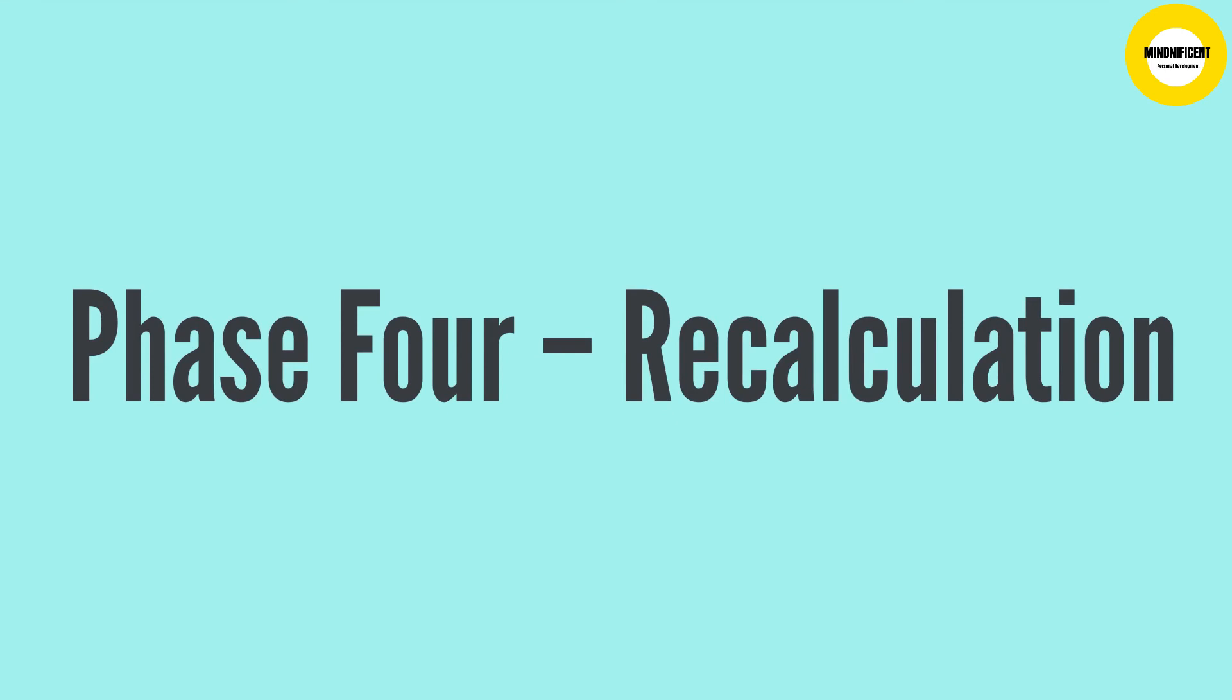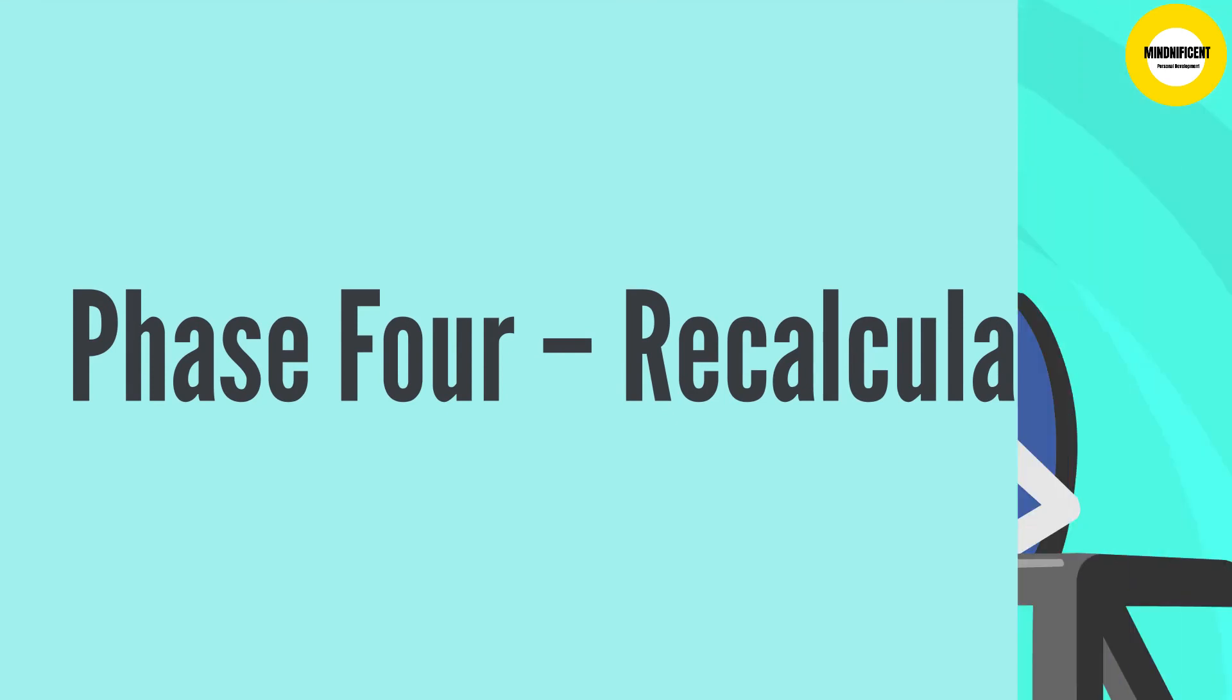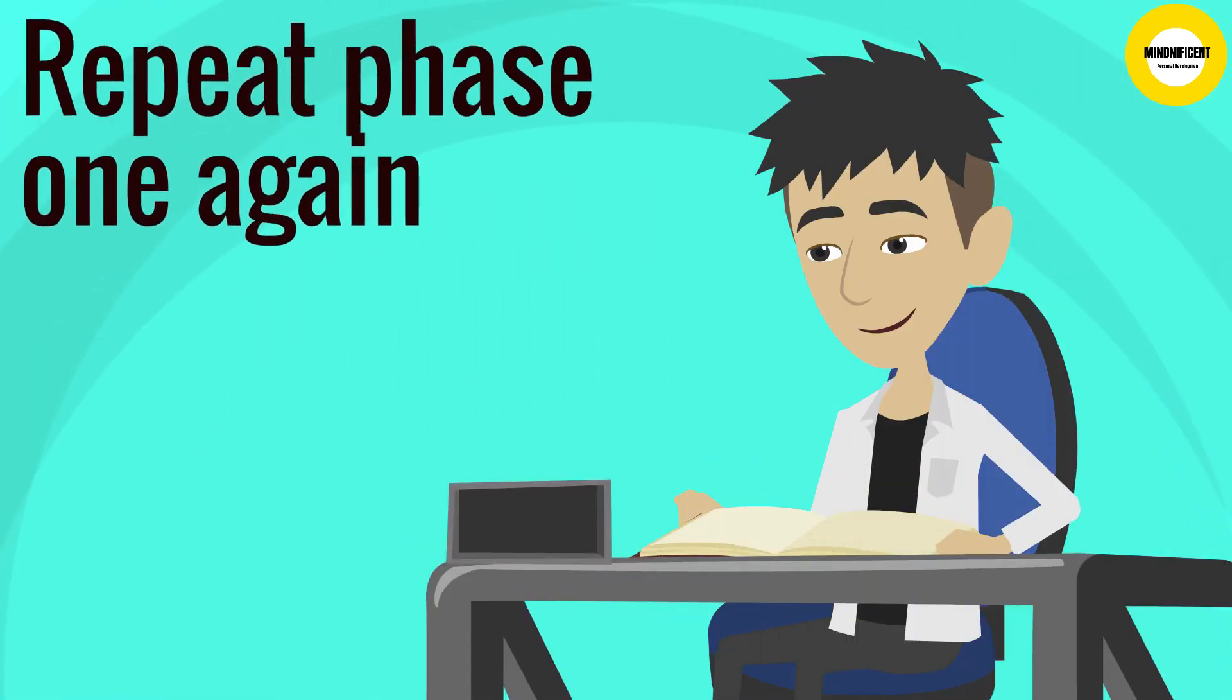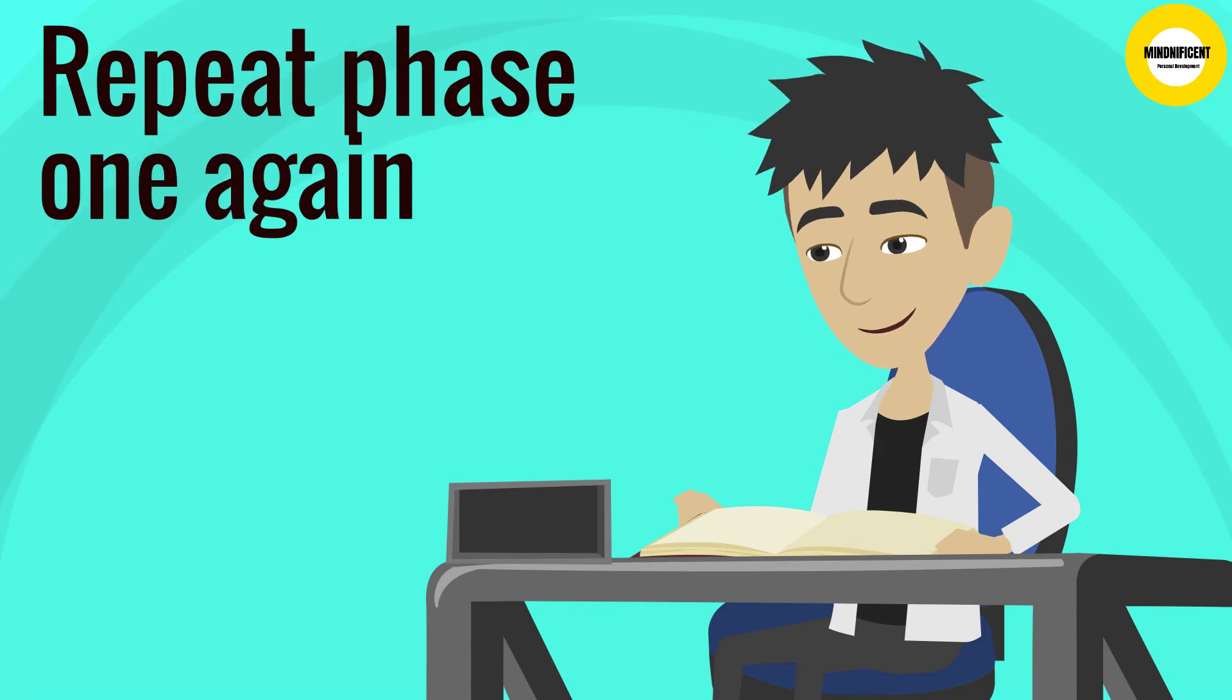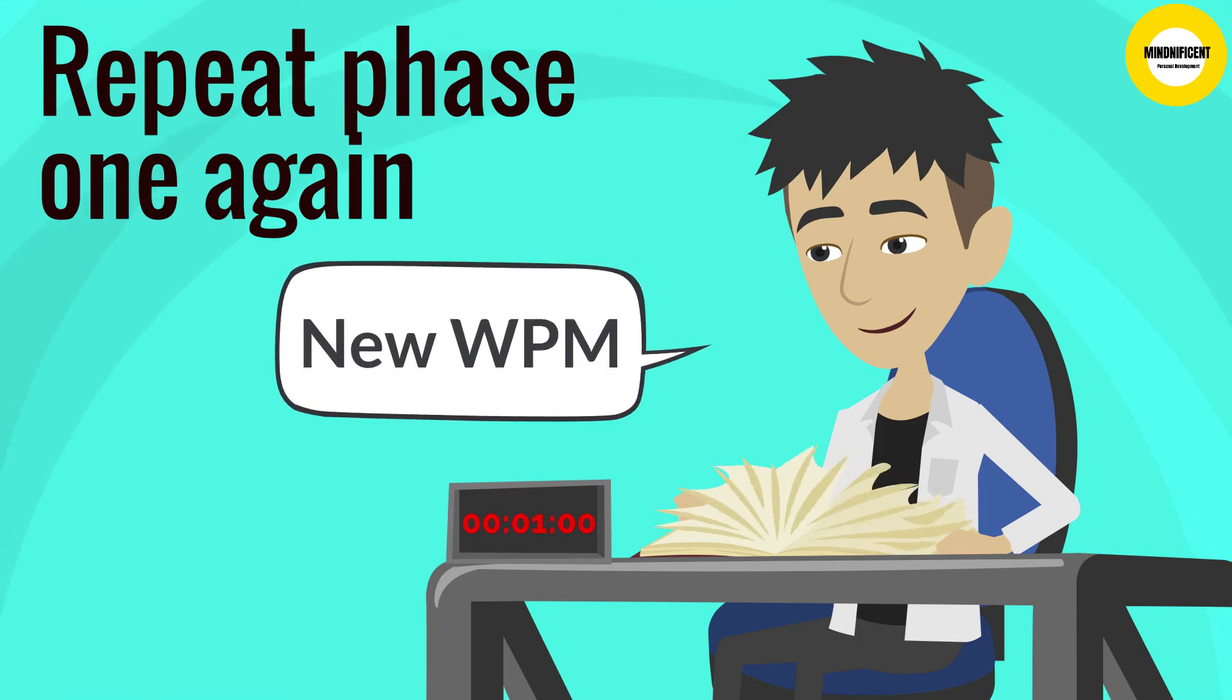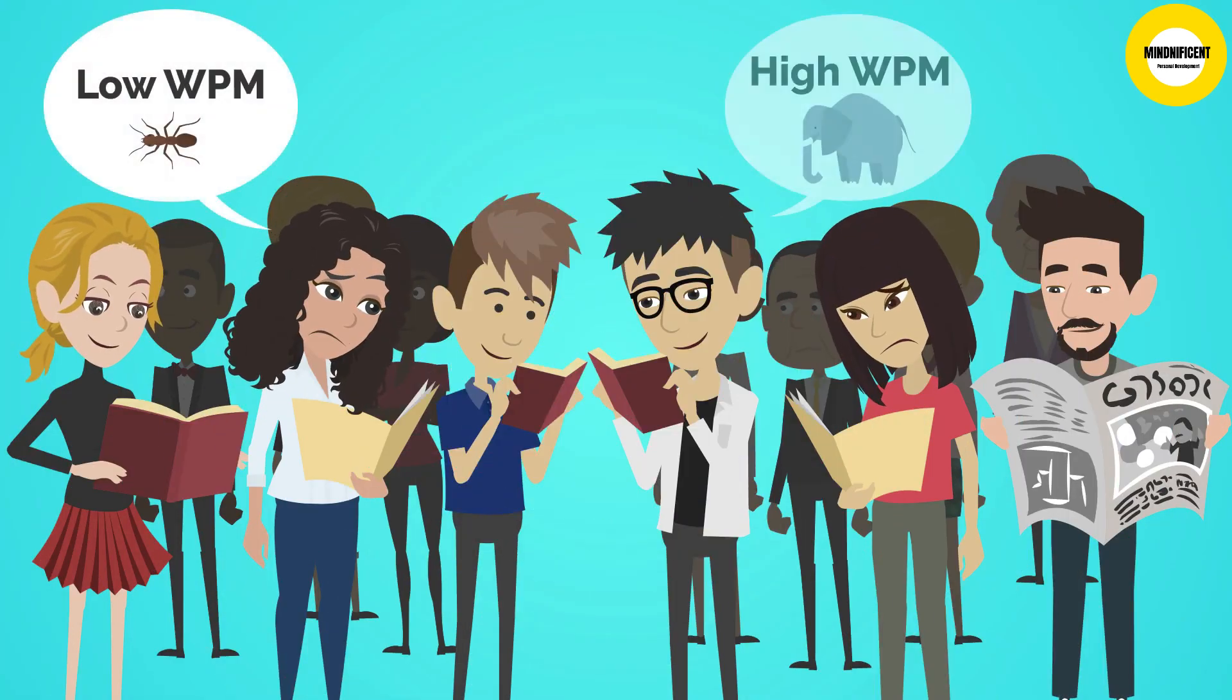Phase 4. Recalculation. This is where we repeat Phase 1 again, reading as fast as possible for one minute, while still comprehending everything that's on the page. This is your new words per minute, and whether it's a small or a large increase, most people will almost certainly improve on their first try.